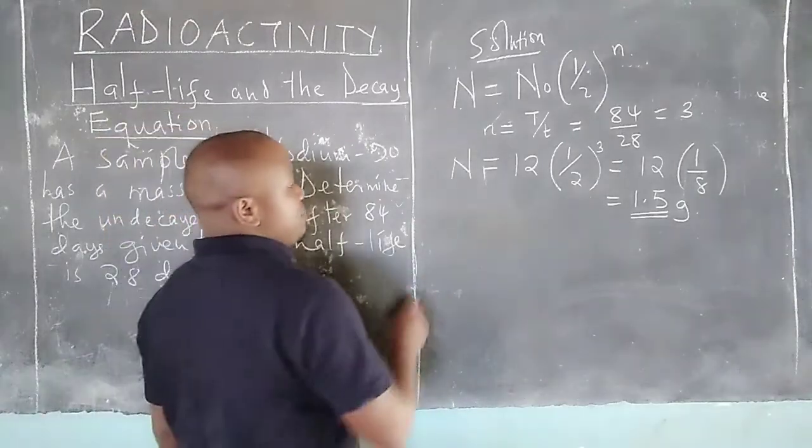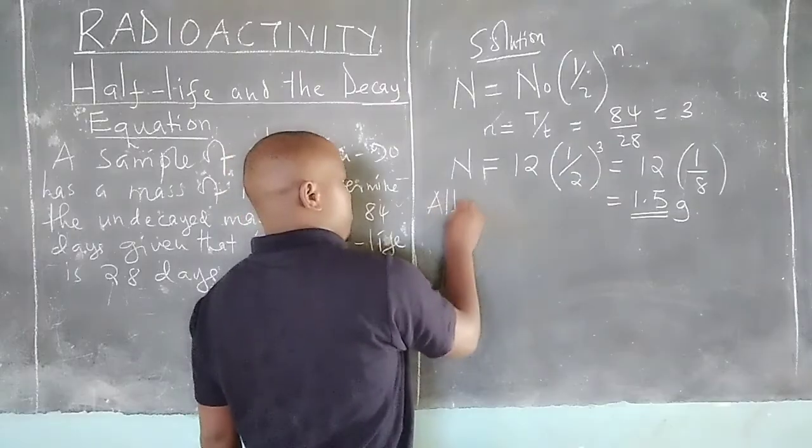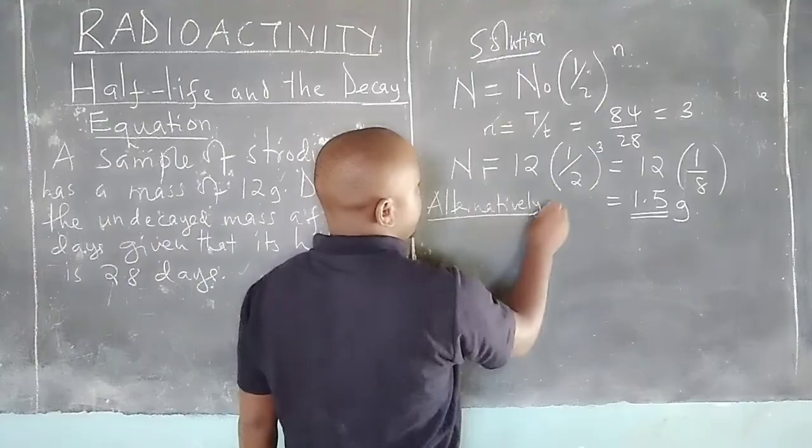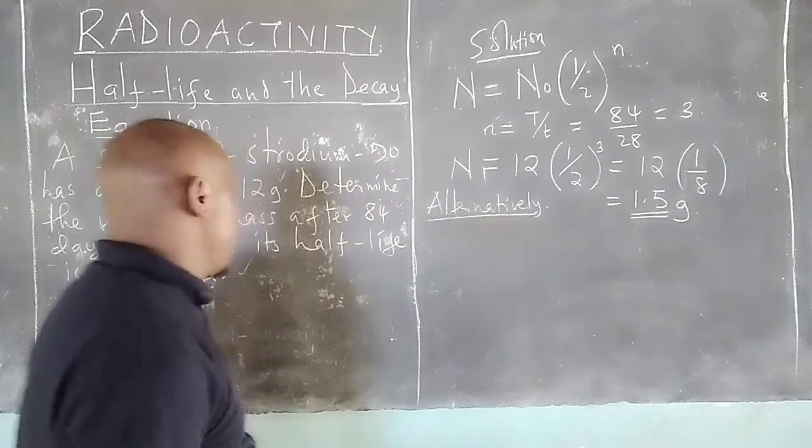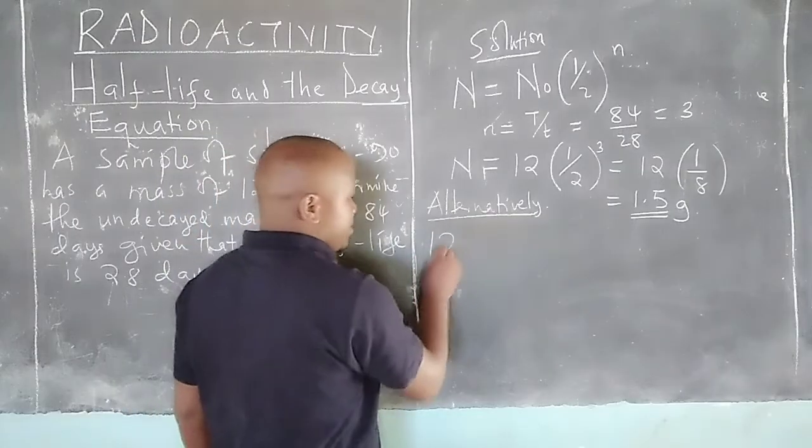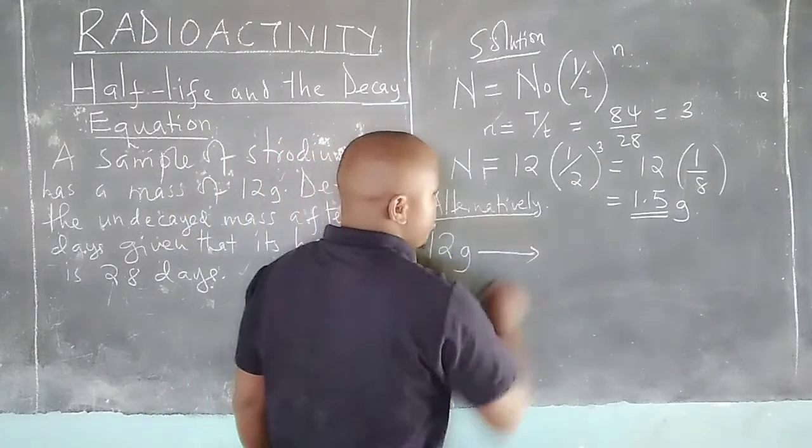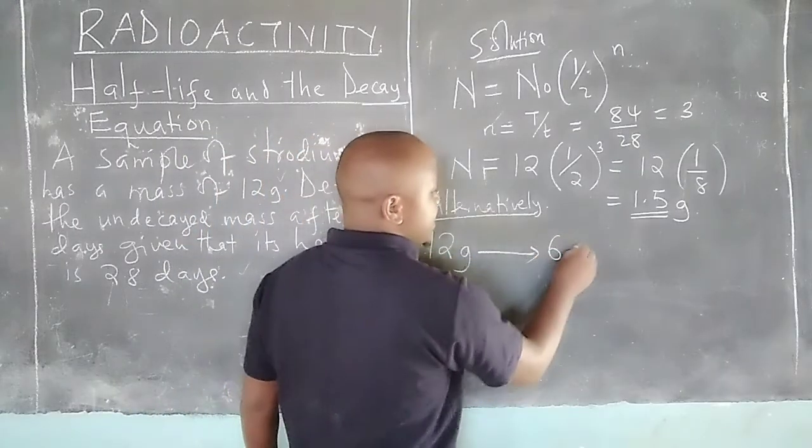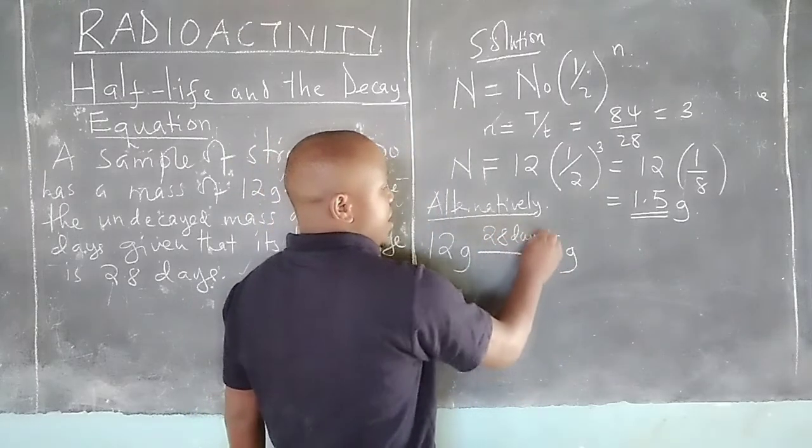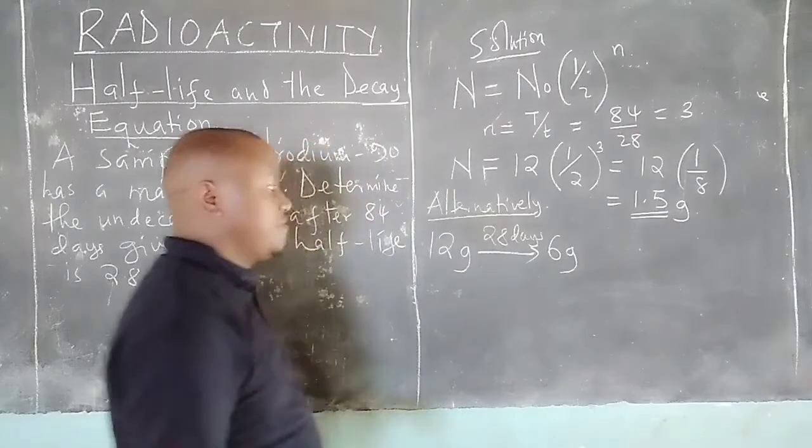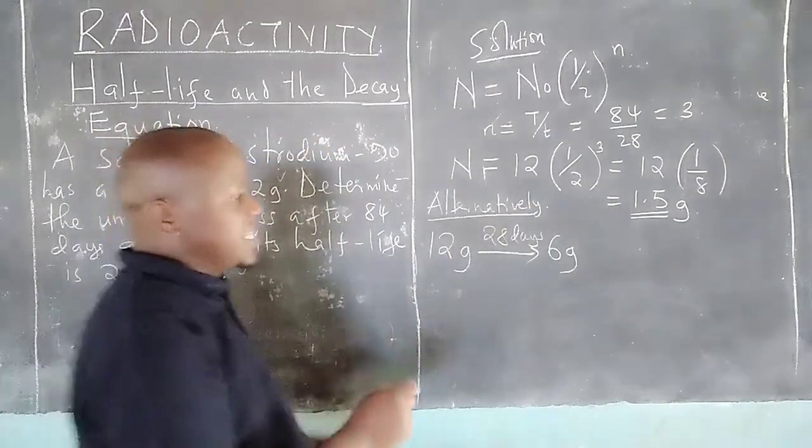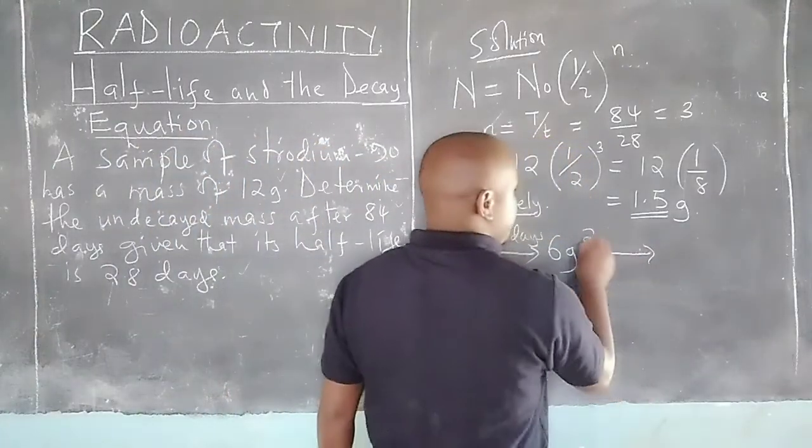Alternatively, we can have a decay series. From 12 grams, these 12 grams will become 6 grams after 28 days, depending on the definition of half-life. The remaining 6 grams will take another 28 days to become 3 grams.